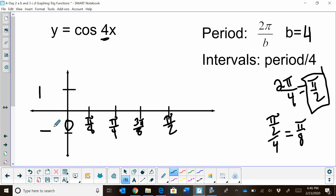Now cosine's parent graph starts at one, oscillates to negative one. So we're going to start at positive one. The first quarter point hits the x-axis. The second quarter point is our minimum. And then back to the x-axis. And then we finish the cycle at pi halves.